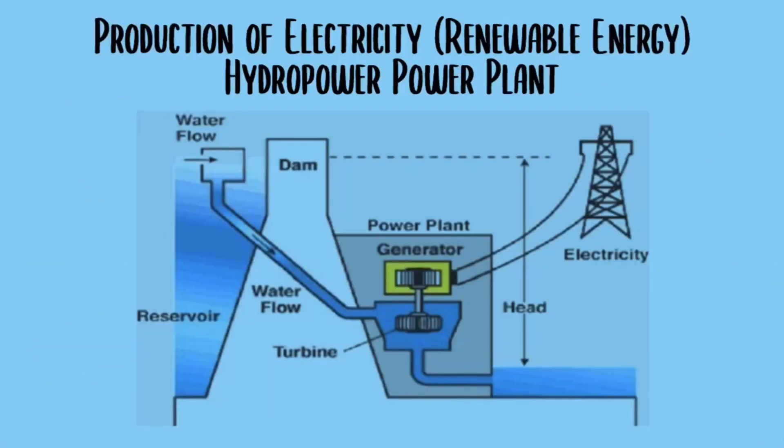Now let's look at the production of electricity using renewable energy. The water in the reservoir flows down and causes the turbine to spin. The kinetic energy from the turbine powers the generator, which generates electricity.